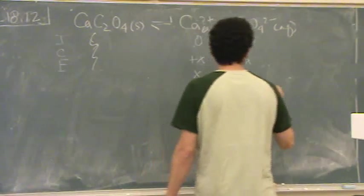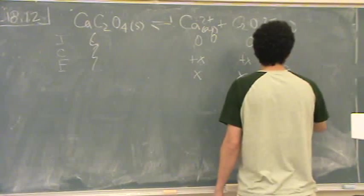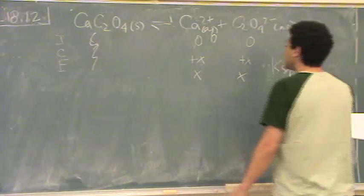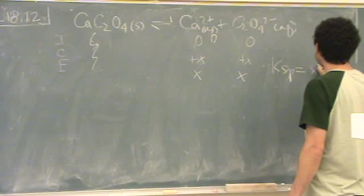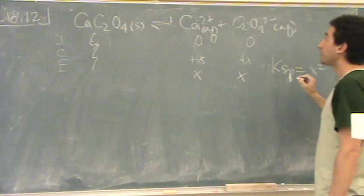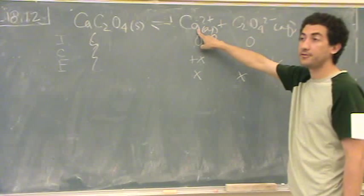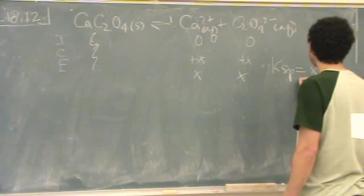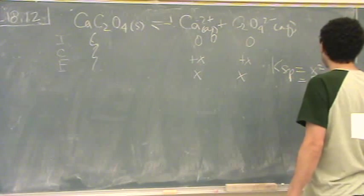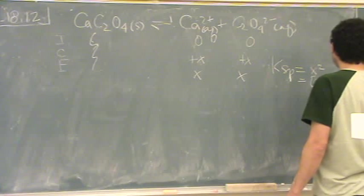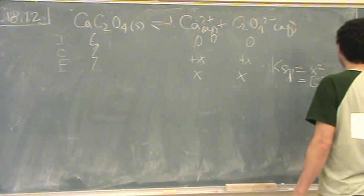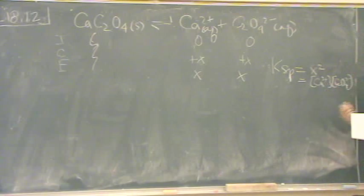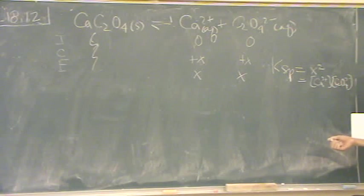And so you would go Ksp equals just x squared, or really the concentration of this is going to equal the concentration of this, because it's calcium 2 plus times the oxalate 2 minus. So those two are going to equal to x. So those two are going to be equal to the x value.